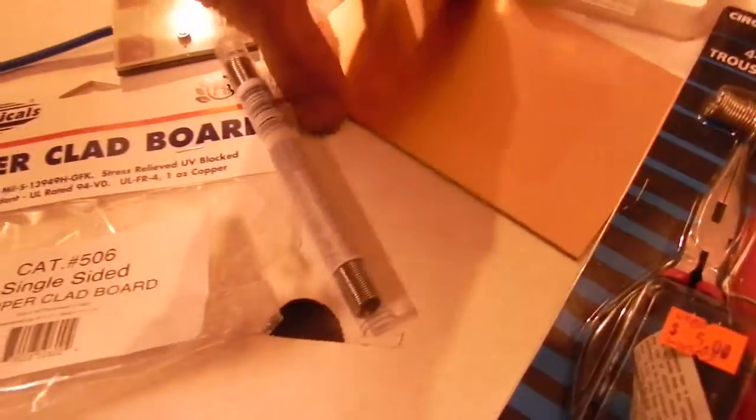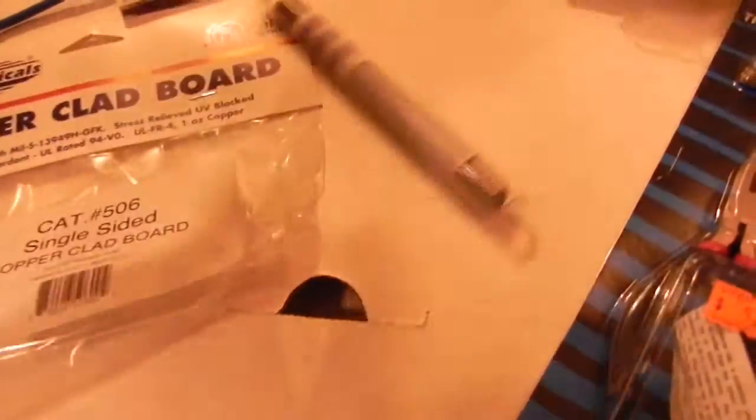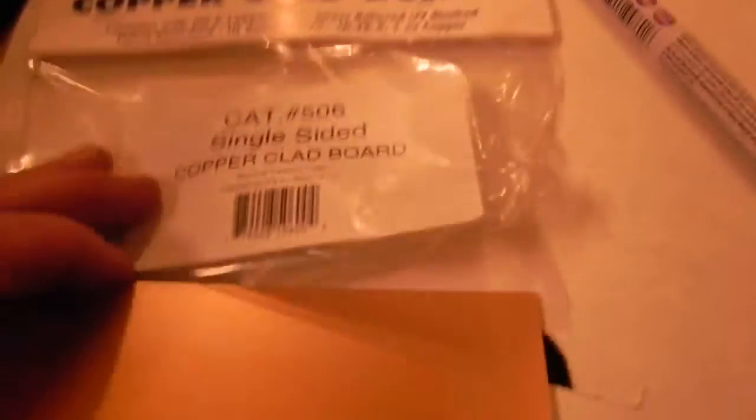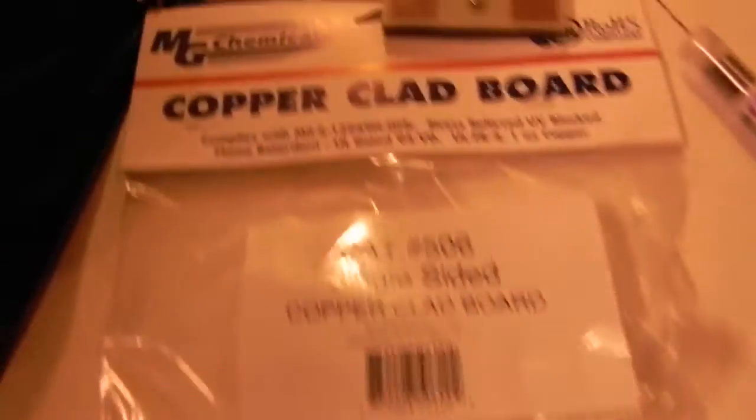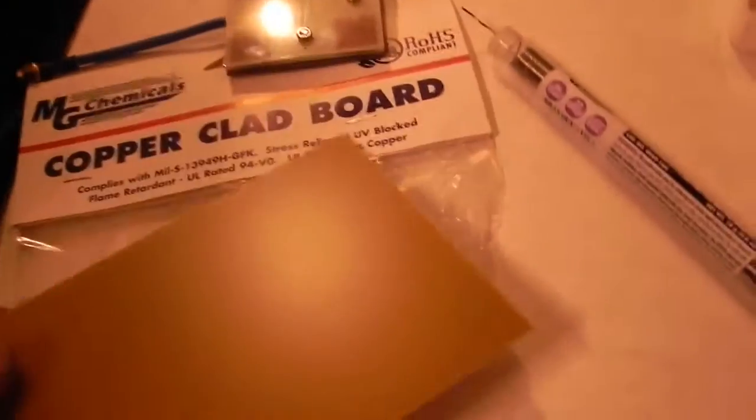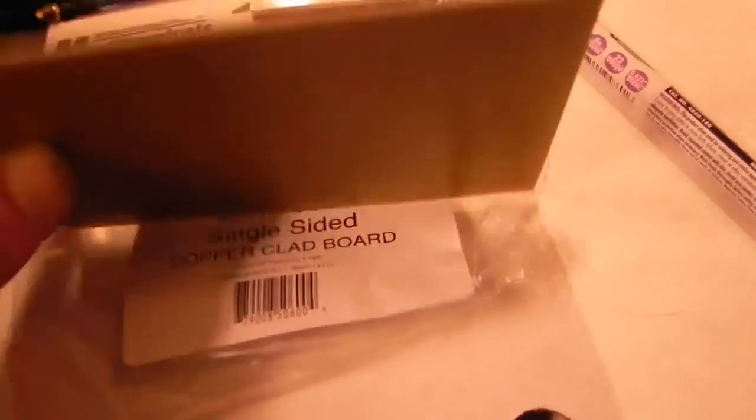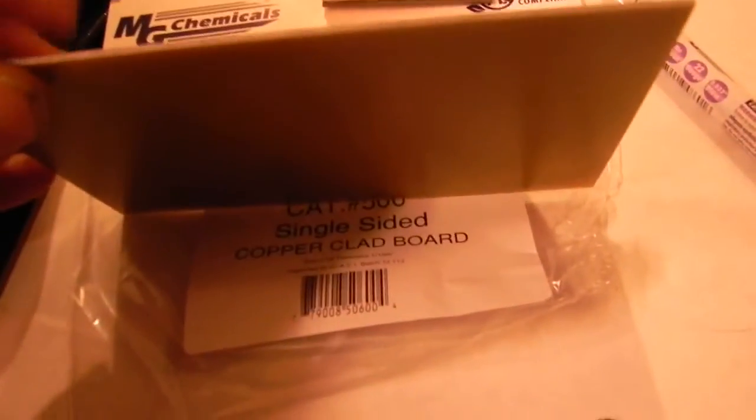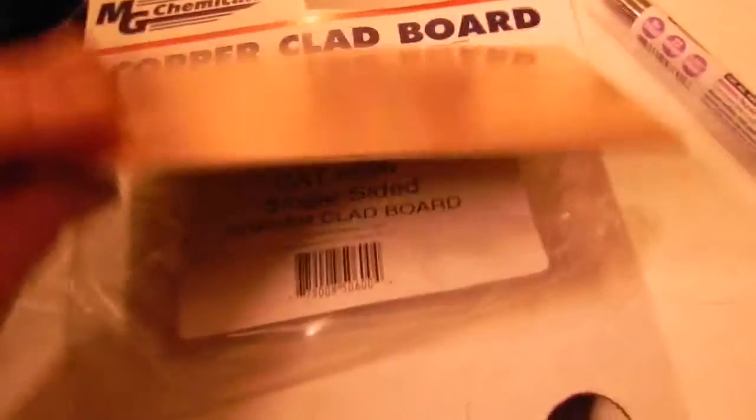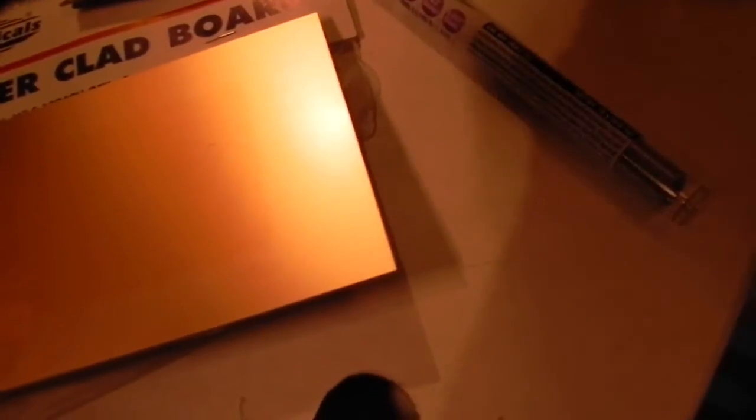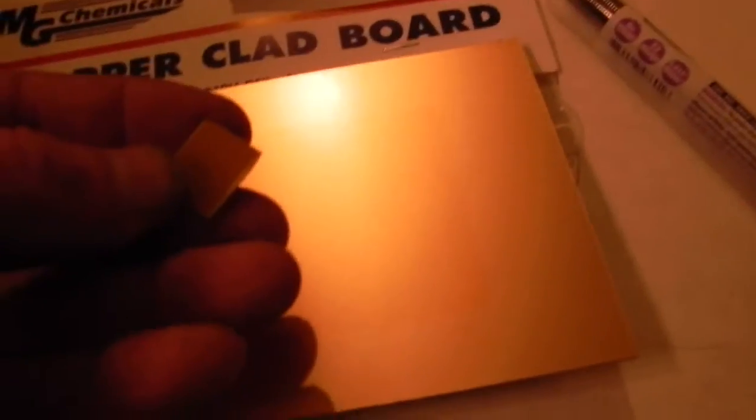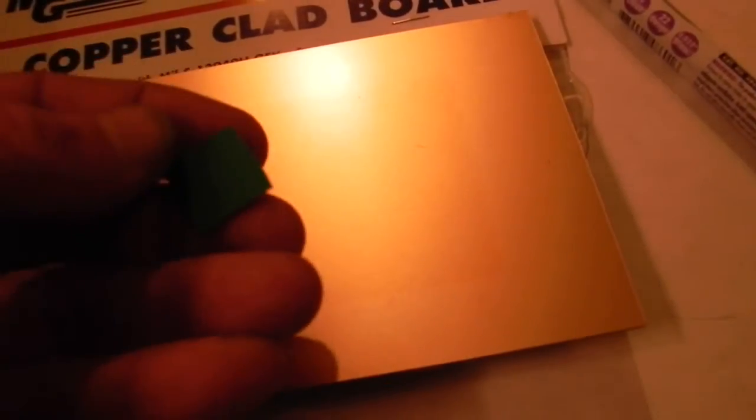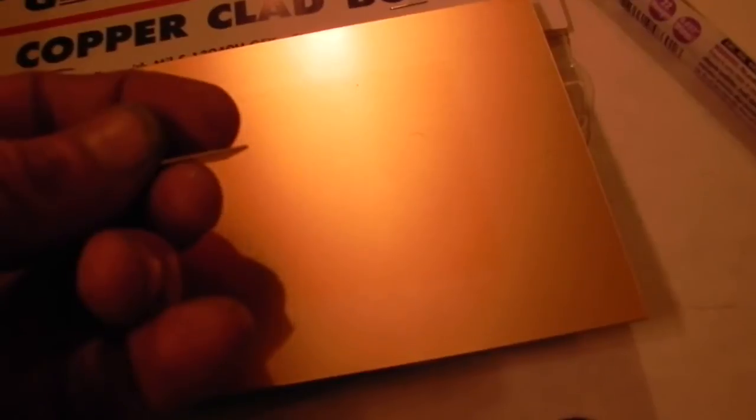We also bought this copper clad board, a single sided copper clad board. It's made by this company, it was about $6, so about $5 US. Now it's quite thick, I didn't want to get copper clad board this thick because the high end antennas for 900 megahertz I got were very thin as compared to that.